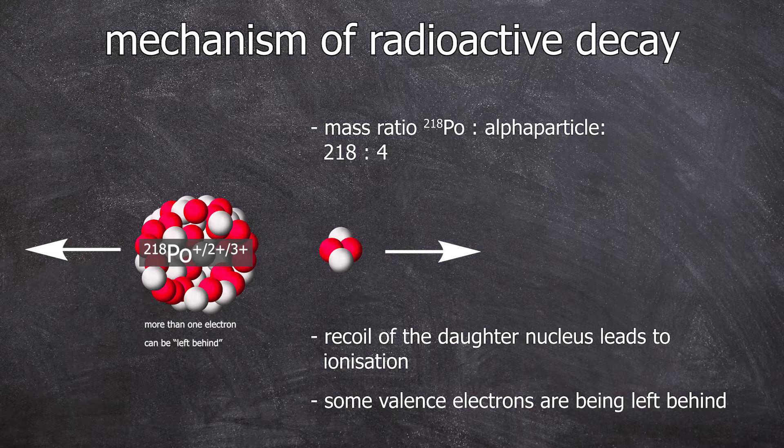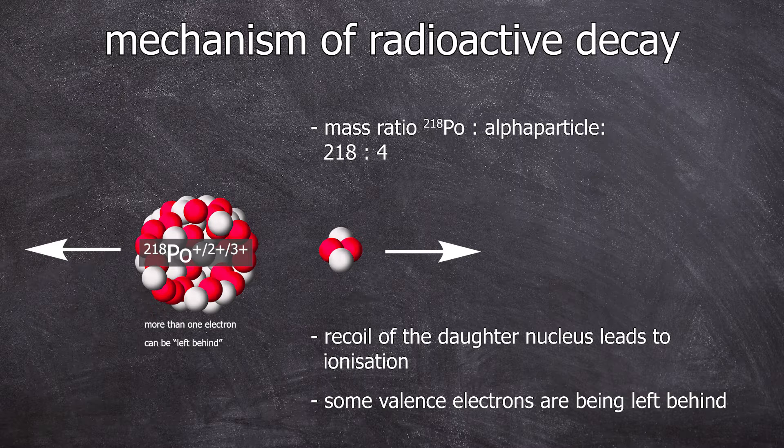So after the decay of radon, we have positive polonium ions. Since we connected the coin to the negative pole, these freshly formed polonium ions are deposited on the coin.